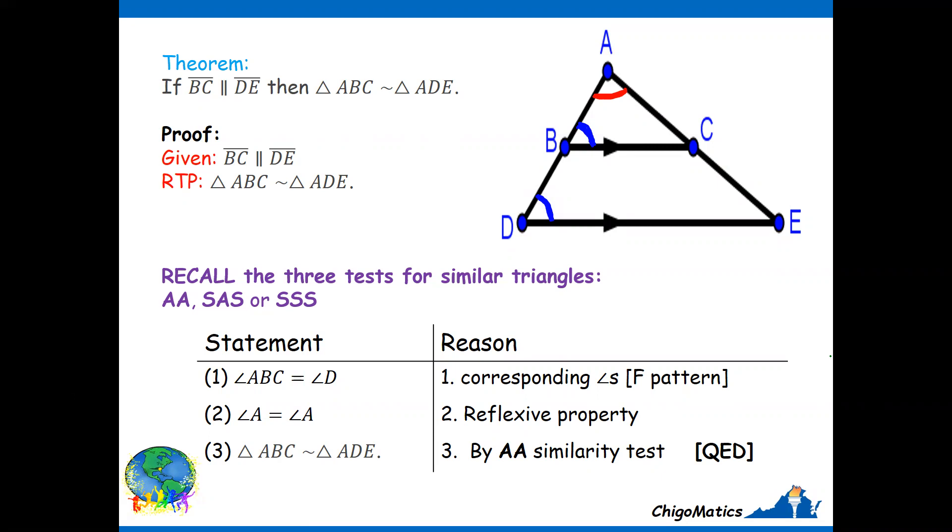That's my second angle, and from there I conclude that the two triangles are similar by AA and the theorem is complete.